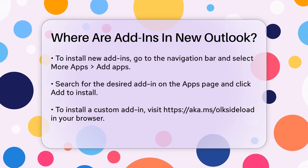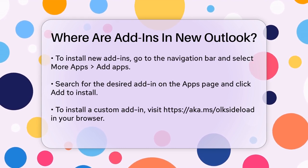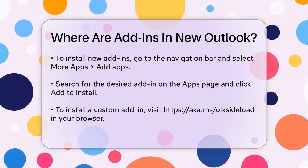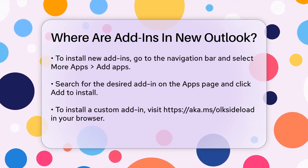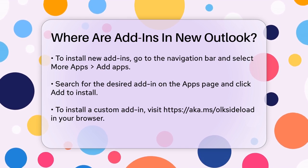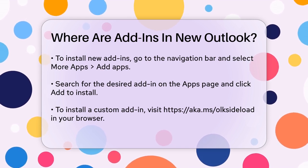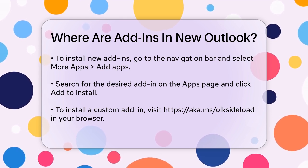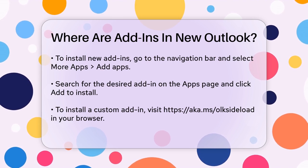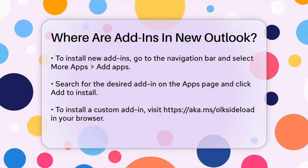To install new add-ins, go to the navigation bar and select More Apps, then Add Apps. This will take you to the Apps page where you can search for the add-in you want. Enter the name of the add-in in the search box, select it to learn more, and then click Add to install it.